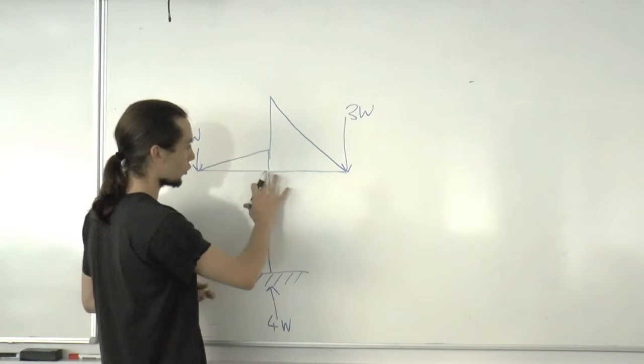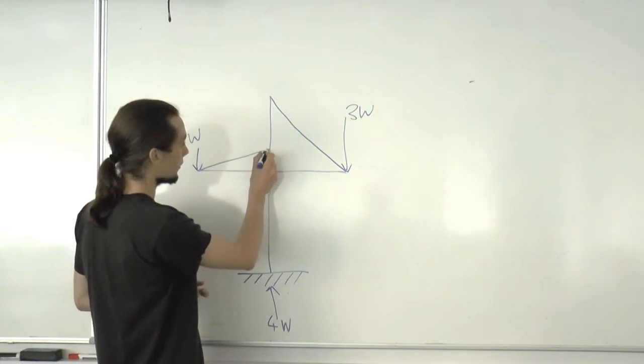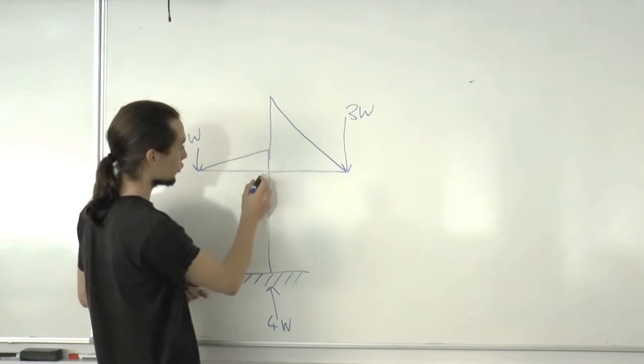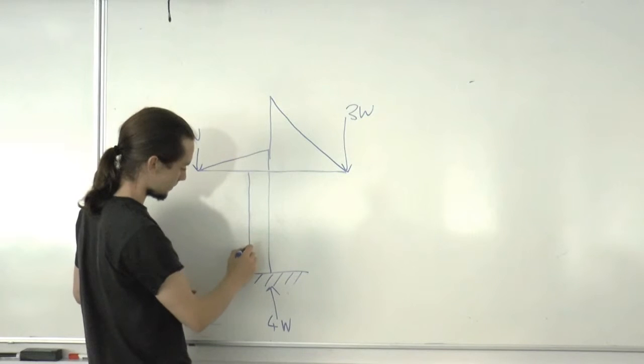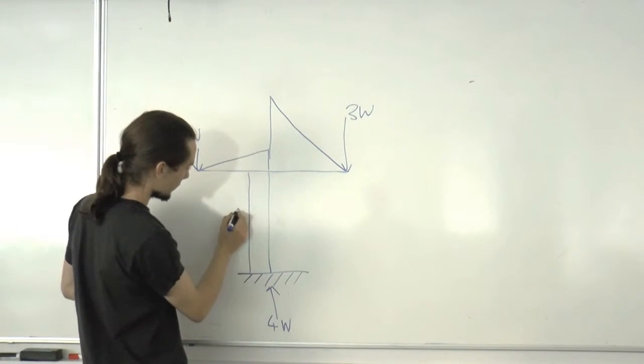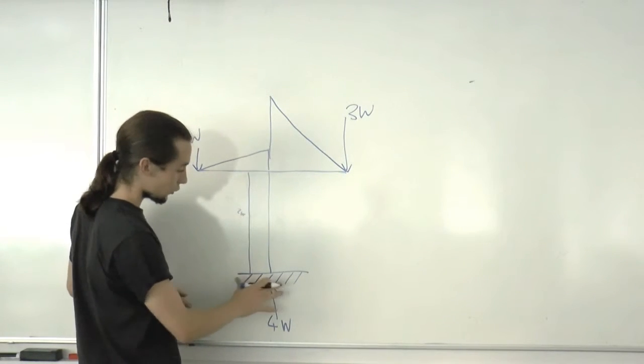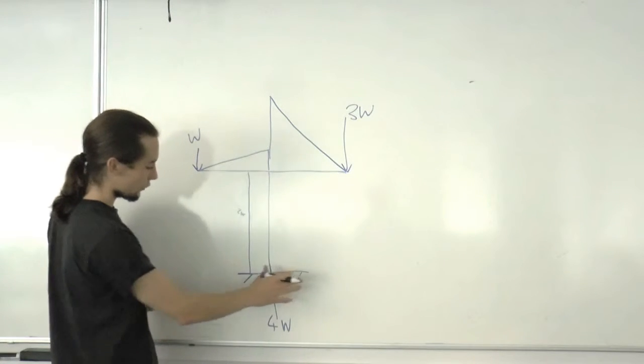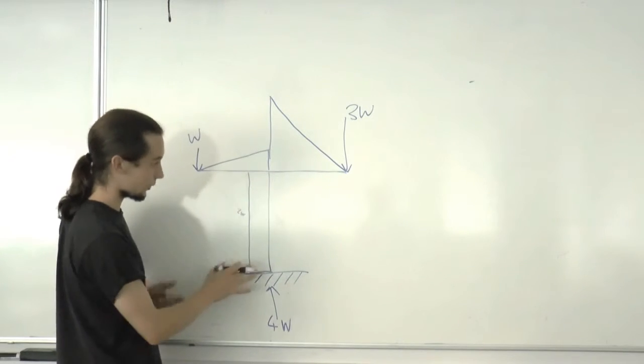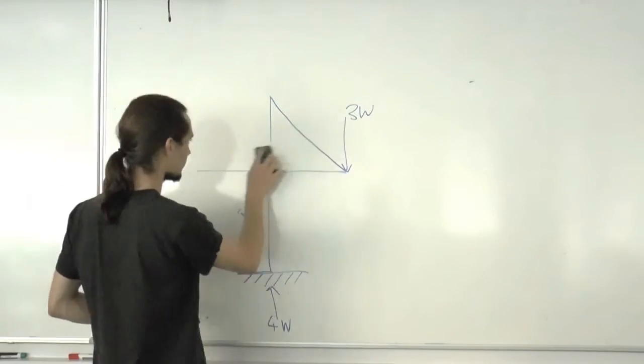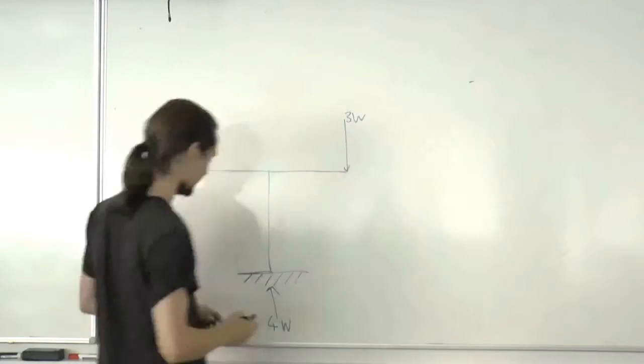So we're going to have the column being bent slightly to the left, and the magnitude is going to be 2W here. There's no horizontal reaction, so there's nothing to contribute to the bending moment at the base. The bending moment is going to be constant here.